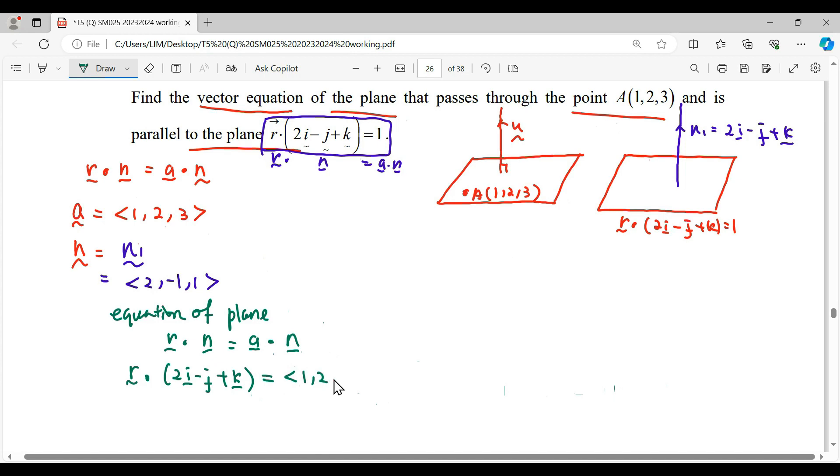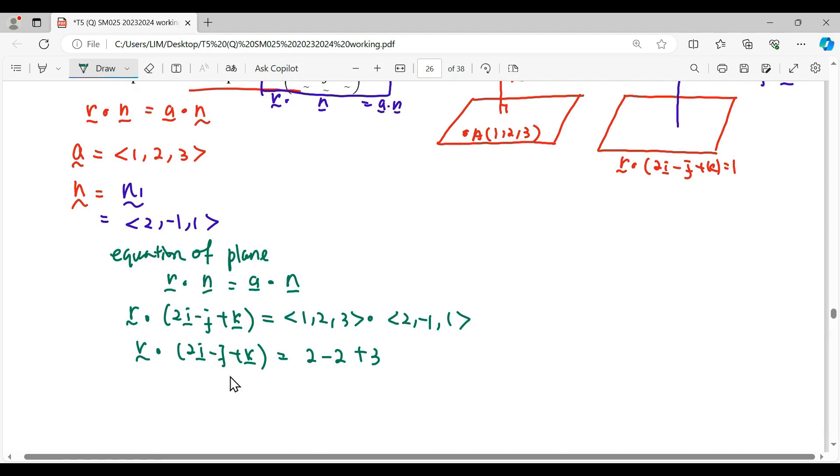This equals the position vector (1, 2, 3) dot with (2, -1, 1). We simplify the right-hand side: 1 times 2 plus 2 times negative 1 plus 3 times 1, which gives you 2 - 2 + 3. So finally, your answer will be R·n = 3.